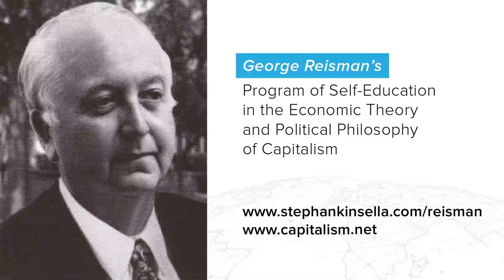In order for these spending shifts to be accompanied by corresponding shifts of production, it is necessary for wide-ranging shifts in the investment of capital to occur. Capital had to be diverted from agriculture to industry, from cities to suburbs, from railroads, horse breeding, buggy making, and blacksmithing, to automaking, gas stations, motels, and ski resorts.